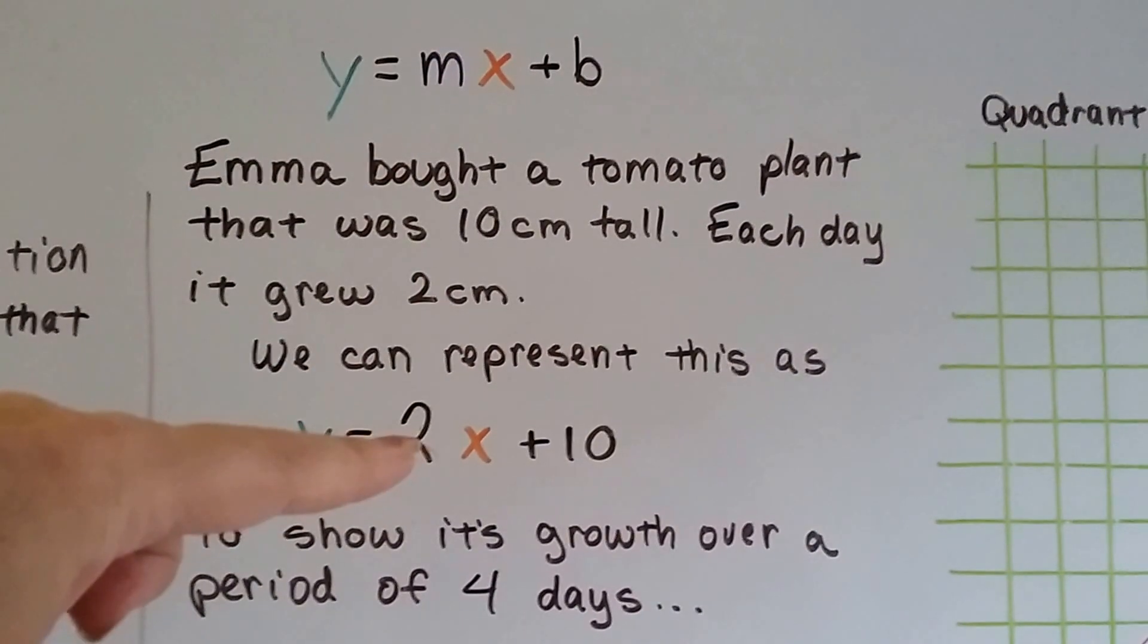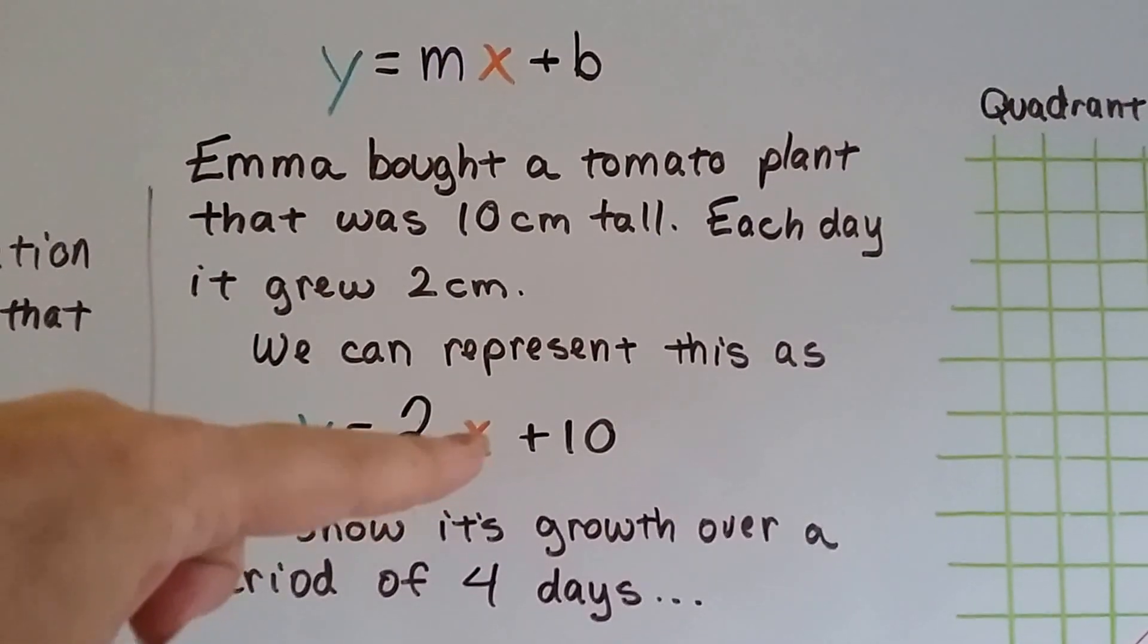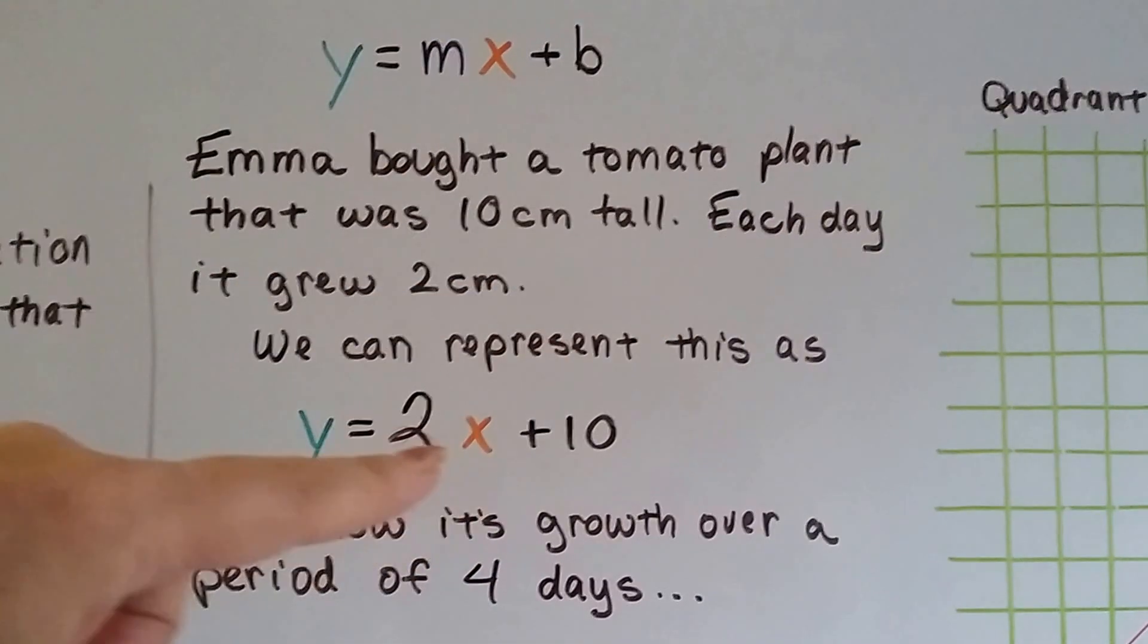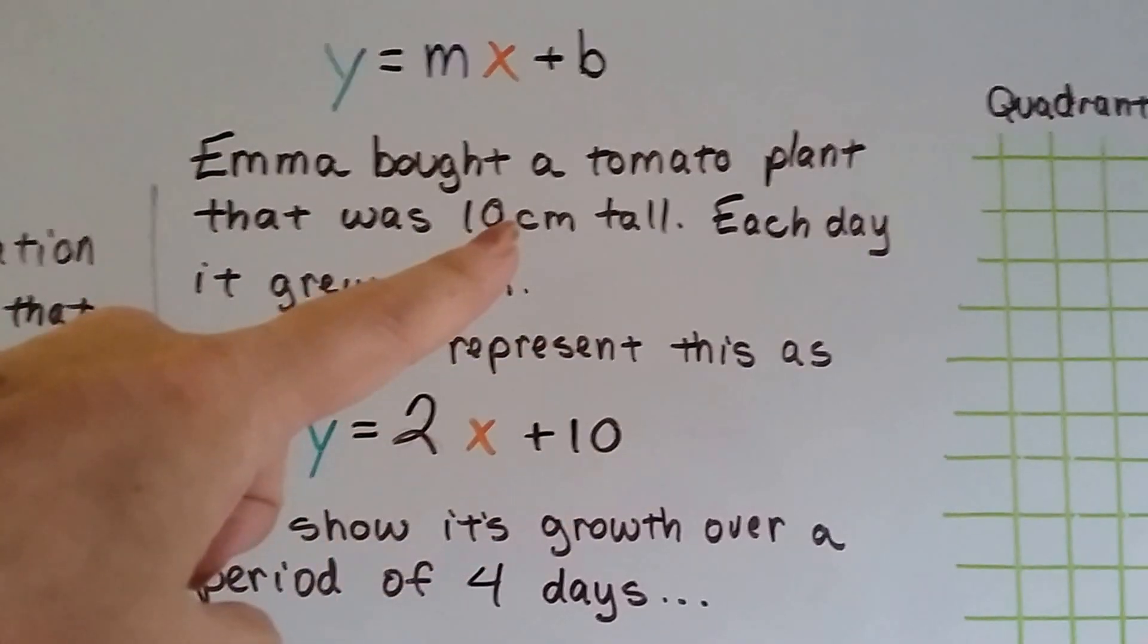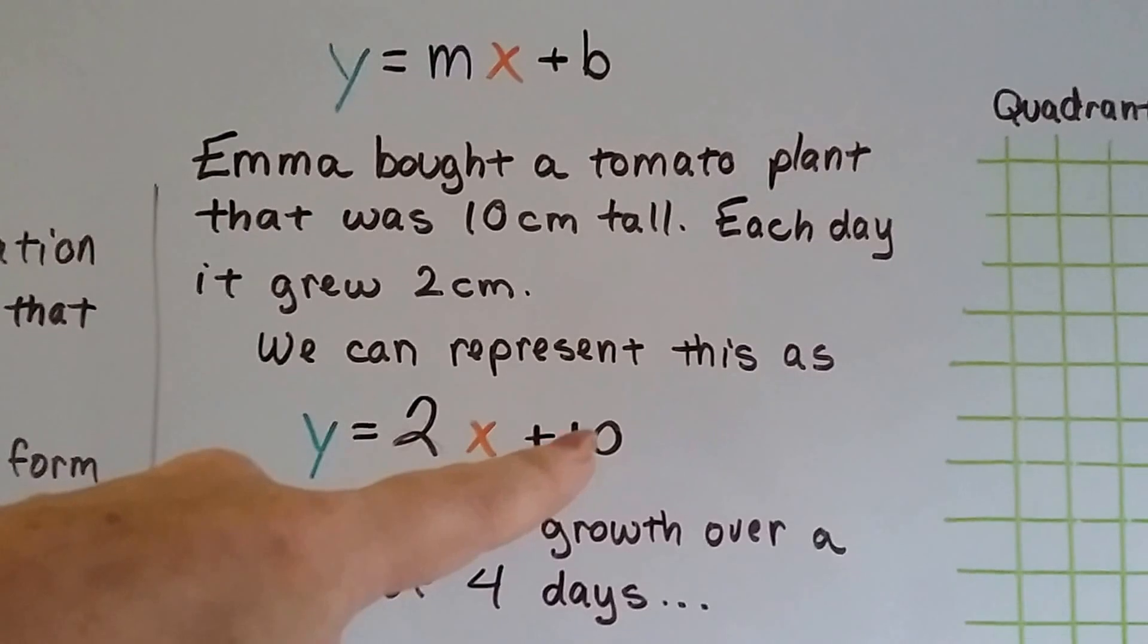The 2 is the m, the slope. X is going to represent each day, so the 2 is the 2 centimeters it grew every day. And the 10 represents its original height of 10 centimeters when she first bought it.